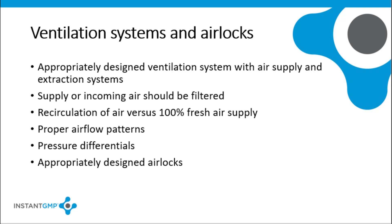An important measure against cross-contamination is the design of the ventilation system. All incoming air should be filtered to an appropriate standard to achieve the grades of cleanliness specified for the room being supplied. The use of appropriate pressure differentials in air extraction, together with air locks, is one of the main ways of achieving control over cross-contamination. The recirculation of air must be carefully evaluated.